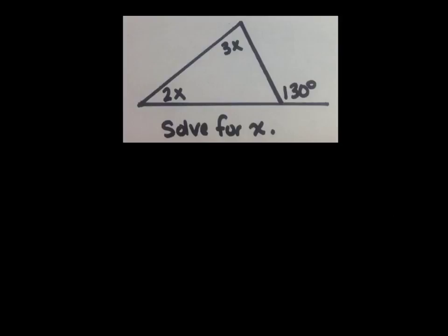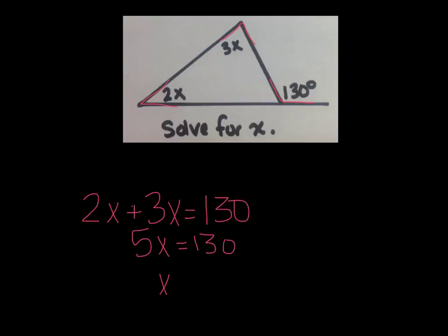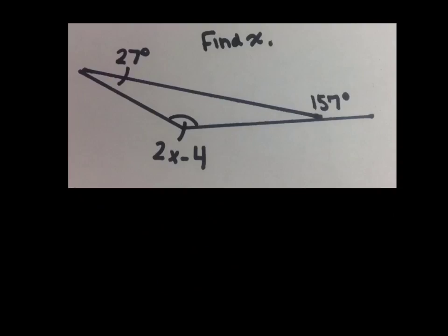Here's another example that has some variables in it. In this case, we're trying to figure out what X is. Well again, according to the exterior angle theorem, we know that this exterior angle is equal to this angle plus this angle. Those are our two remote interior angles. So then we can write an equation that says 2X plus 3X has to equal 130. 5X equals 130. 130 divided by 5 is 26. So X equals 26 degrees.